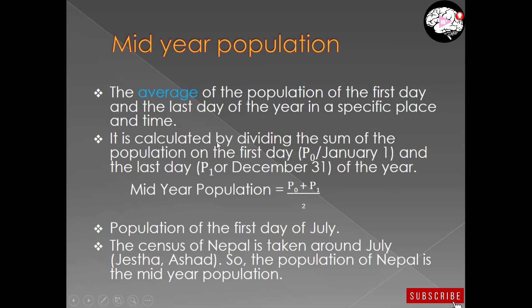The formula is calculated by dividing the sum of the population on the first day — P0, which is the population of January 1st — and the last day — P1, which is the population of December 31st — by 2. So mid-year population = (P0 + P1) ÷ 2. Alternatively, you can write it as (P1 + P2) ÷ 2 in some notations.